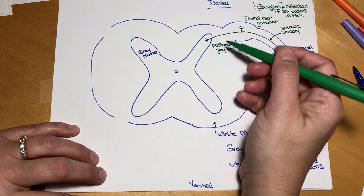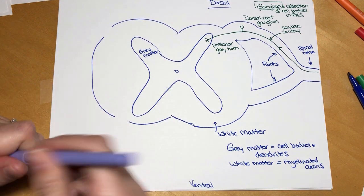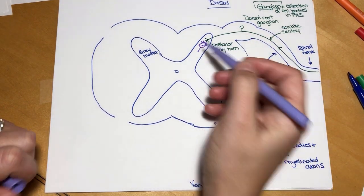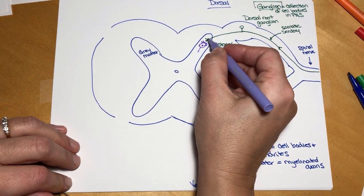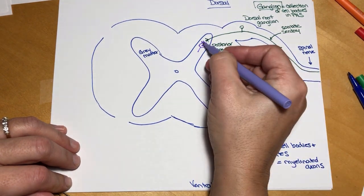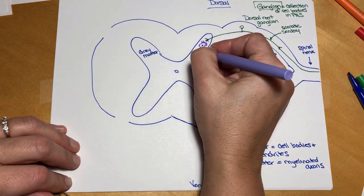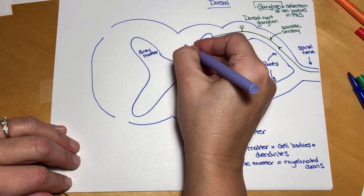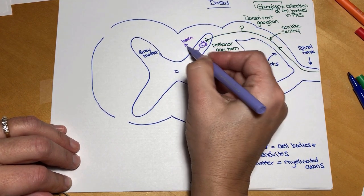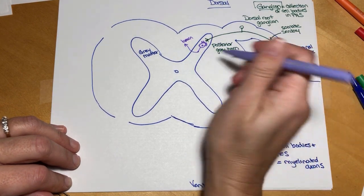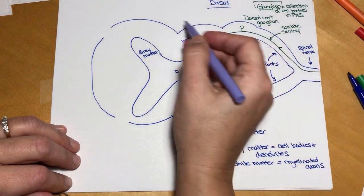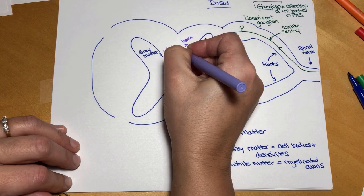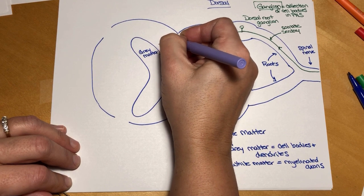All somatic sensory information comes into the posterior gray horn. It's going to synapse, by and large, with another neuron that we can call an interneuron for now. Interneurons are multipolar. The interneuron has a couple of options. The first option: it's in the gray matter of the posterior gray horn, but it can go into the white matter and then ascend up to the brain. It goes in the white matter because the axon part is myelinated, and myelinated structures must be in the white matter. This area is called a white column, and because it's on the dorsal side, we call it the posterior white column. We also have lateral white columns.